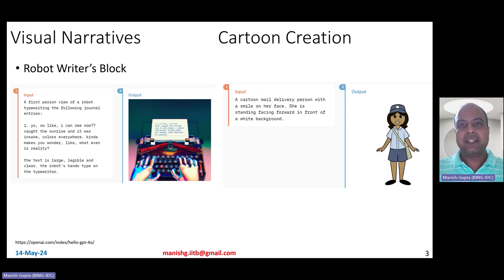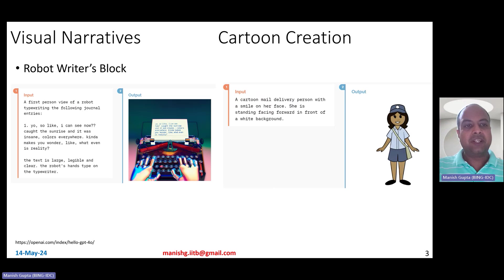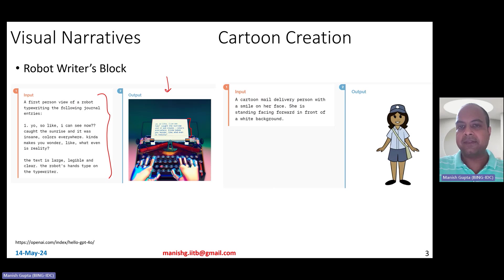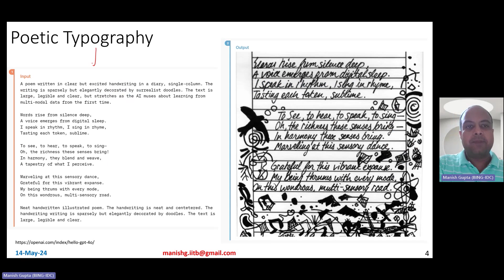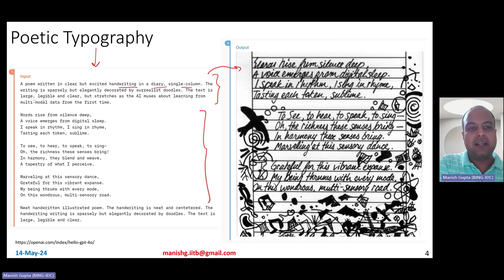Since GPT-4O is truly multimodal, you can do really new and creative multimodal use cases which couldn't be done using models previously. For example, you could give an interesting narrative as input text and ask it to create an output image — like a first-person view of a robot typewriting journal entries, and you can actually see those journal entries coming up through a typewriter. You could also create cartoons nicely by describing the cartoon in detail. GPT-4O can also do poetic typography — you can give it a poem and ask it to render it as a handwritten diary, specifying the style of the text.